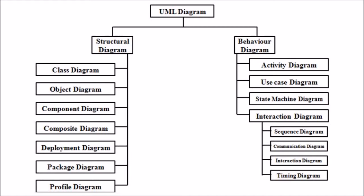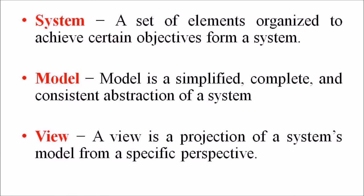Next we are going to discuss about the systems and models in UML. A system is a set of elements organized to achieve certain objectives. Systems are often divided into subsystems and described by a set of models. A model is a simplified, complete and consistent abstraction of a system created for better understanding. And a view is a projection of a system's model from a specific perspective.